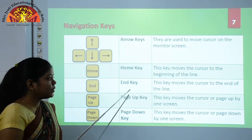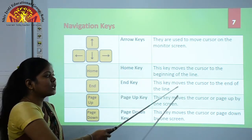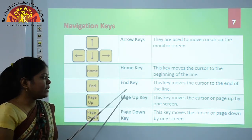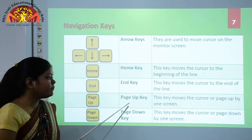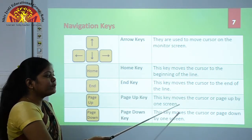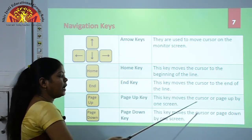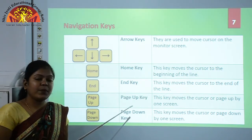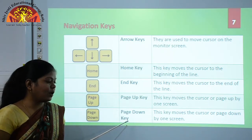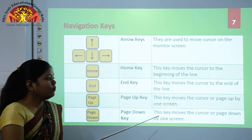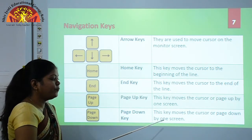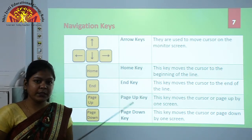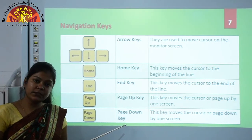Next we have the End key, which moves the cursor to the end of the line. Next is the Page Up key, which moves the cursor or page up by one screen — press it to go to the previous page. And the Page Down key moves the cursor or page down by one screen — press it to see the next page from the current page.